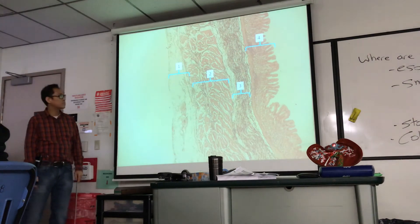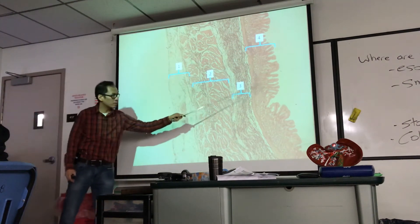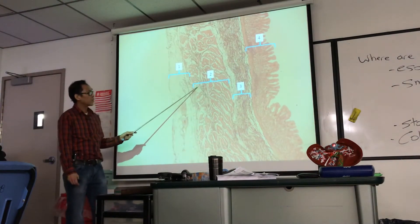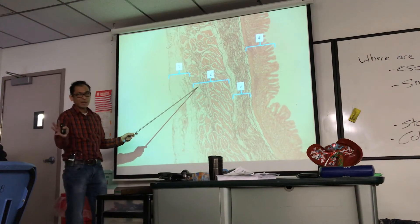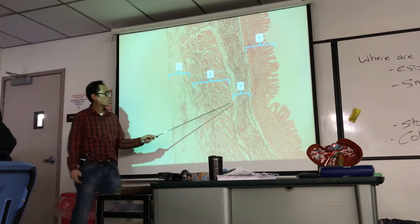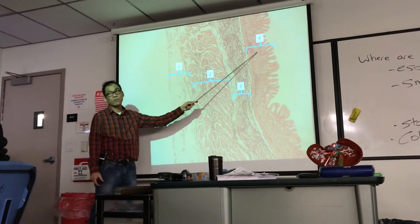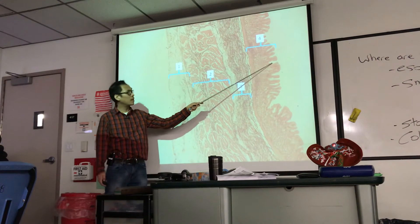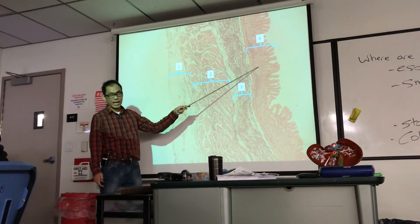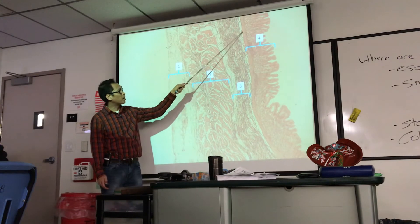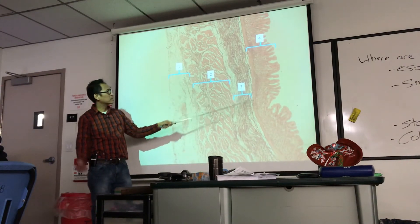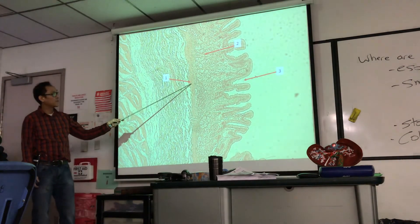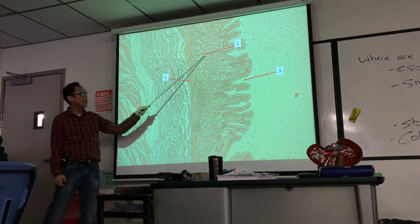Going from outer to inner, starting with number one: serosa. This is all muscularis externa — there are three layers in there, but I can't make them out, so don't worry about it. Number three: submucosa. Number four: mucosa. On this picture, if it's a pit, call it a gastric pit; deeper in the mucosa, it's a gastric gland. That pink there is going to be muscularis mucosa. So: muscularis mucosa, gastric gland, gastric pit.